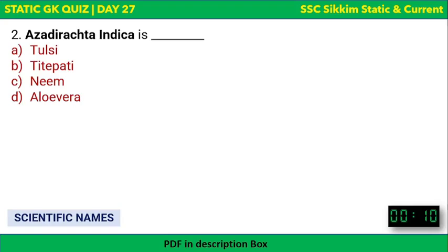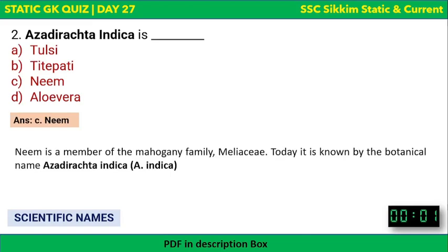Next question: Azadirachta indica is what? The options are Tulsi, Tite Paati, Neem, or Aloe Vera. The correct answer is Neem, which is a member of the Mahogany family, known as Marisha. Today it is known by the botanical name Azadirachta indica, also known as A. indica.